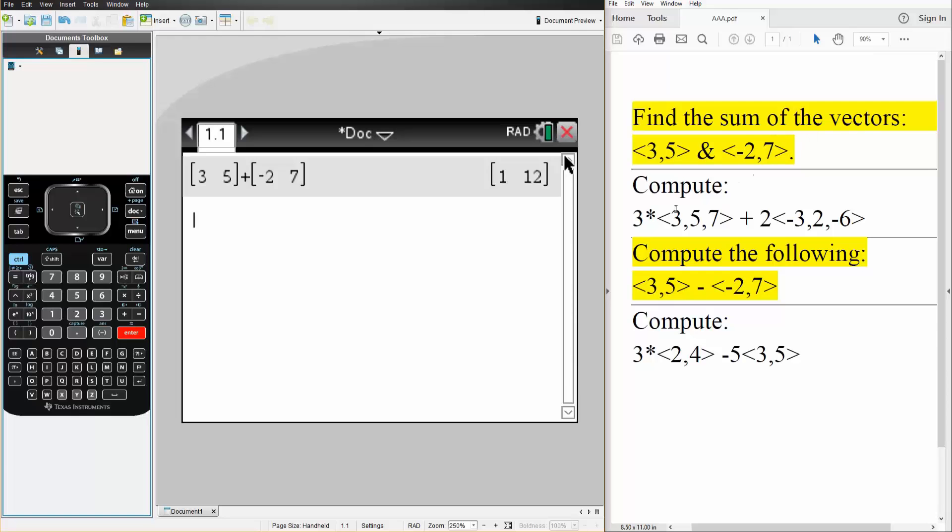The second question is compute 3 times the vector 3, 5, 7 plus 2 times the vector negative 3, 2, negative 6. Same idea. So first, 3 times the vector, so square brackets. Control square bracket, 3, 5, 7.